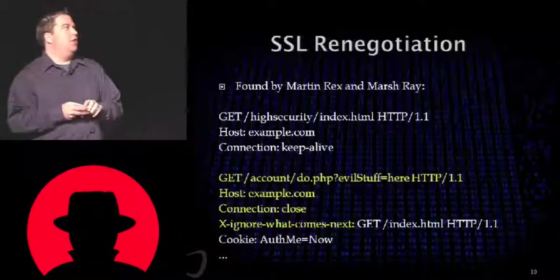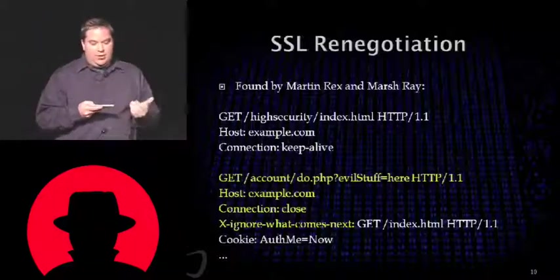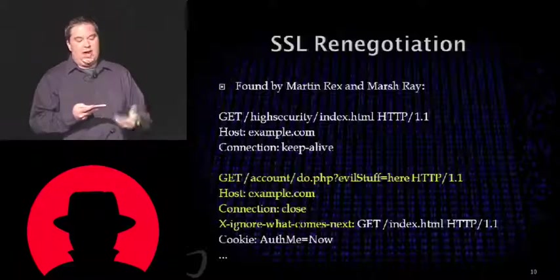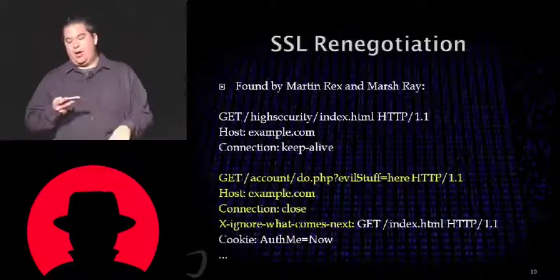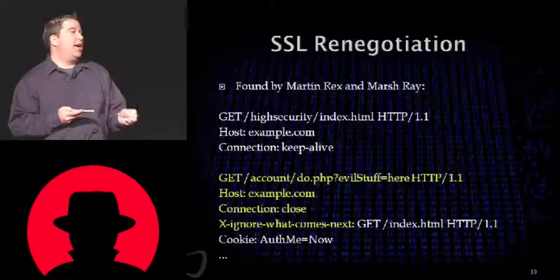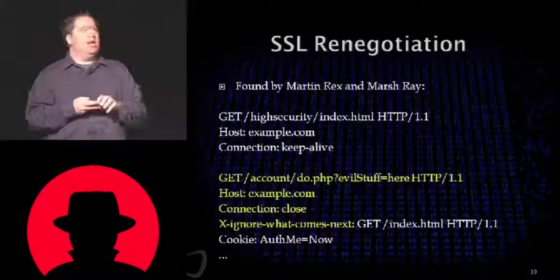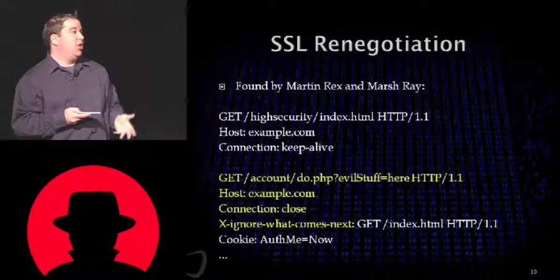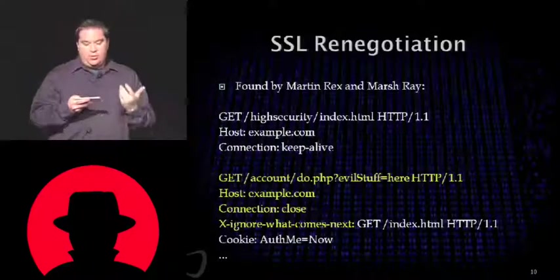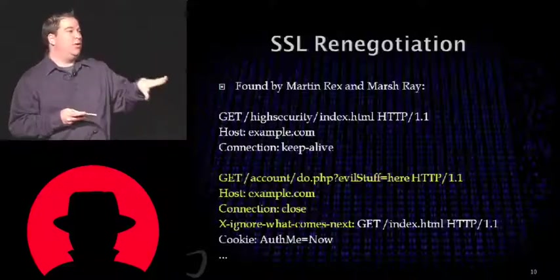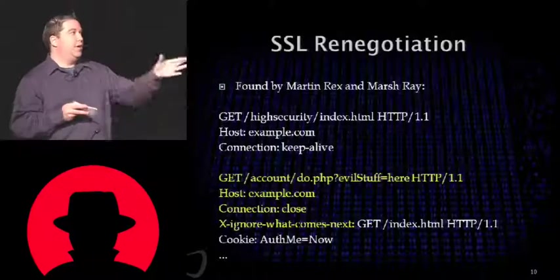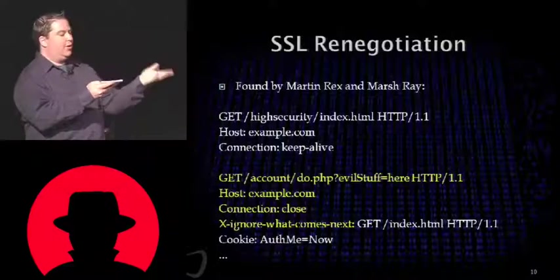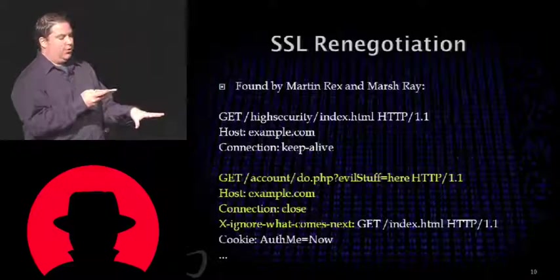Now we talk about SSL renegotiation. This was found by Martin Rex and Marsh Ray in late 2009, and was originally dismissed as too theoretical. Then a Turkish grad student named Anil Kermas created a successful attack against Twitter, using a user's authentication and SSL renegotiation to steal the user's credentials. This is a flaw in the TLS protocol itself, not a browser-related flaw. The idea is that an attacker inserts text at the beginning of an SSL stream with each renegotiation.